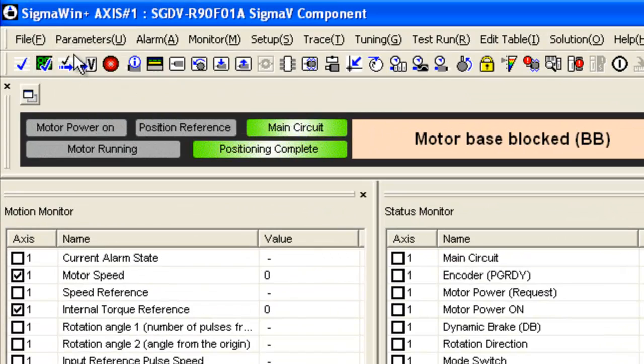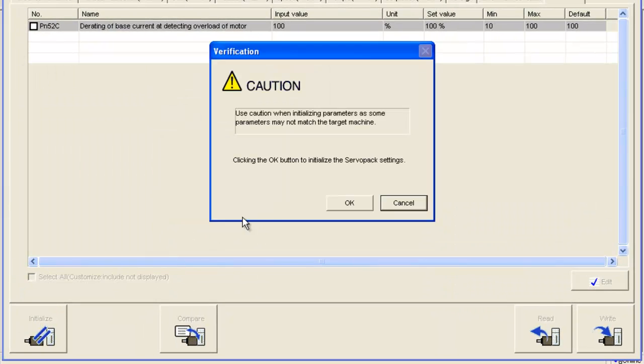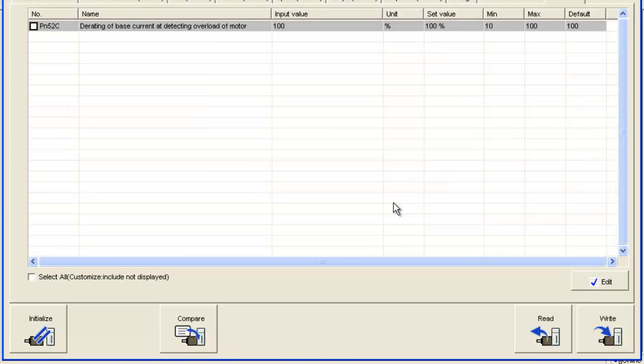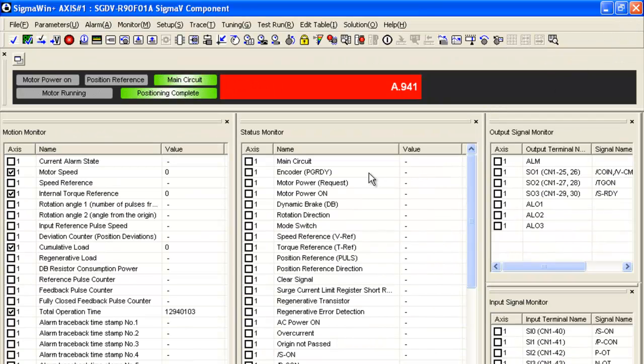So in Sigma Win Plus, we'll go to the parameters and hit initialize. And it does say that I need to change some parameters, requires restart. I will wait to do that until I have finished all of the other parameters.